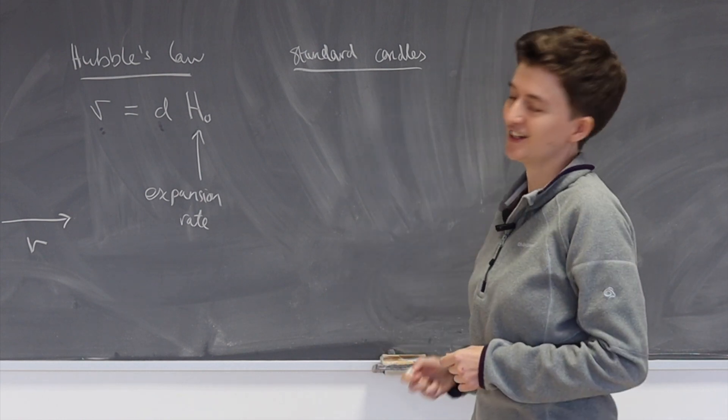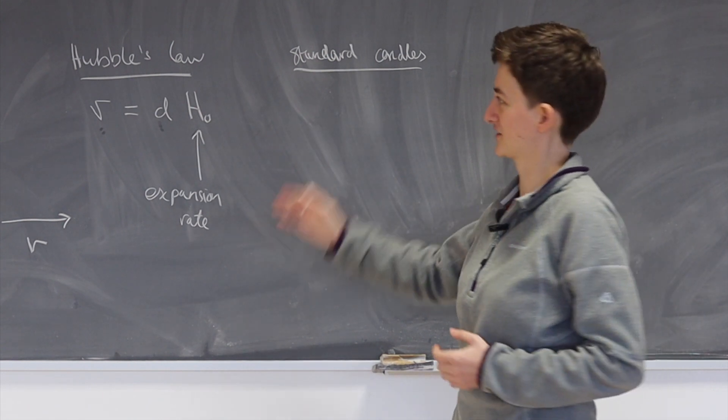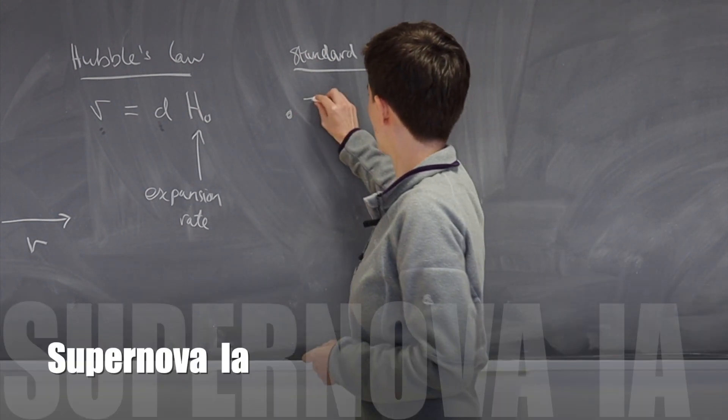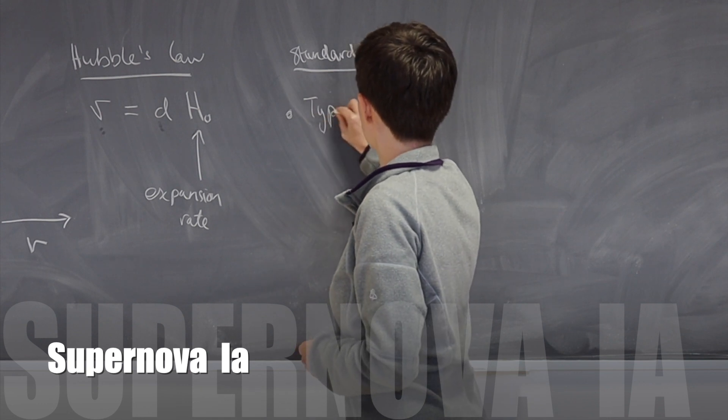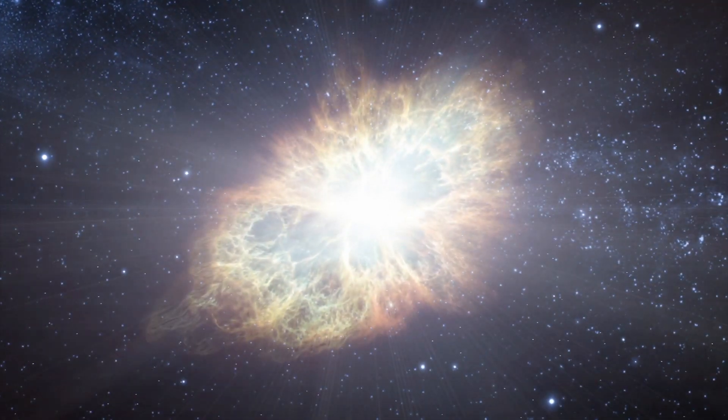And the word candle here, well, this is referring to the fact that we use a particularly bright object to do this measurement. And in this case, we use something called a type 1a supernova. So why are these special? So a supernova is the explosion of a star at the end of its lifetime. So the star, if it's particularly massive,